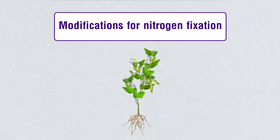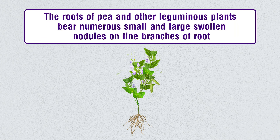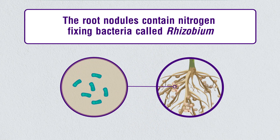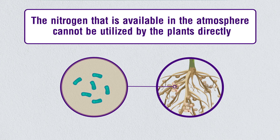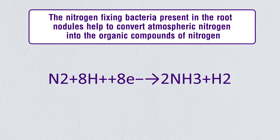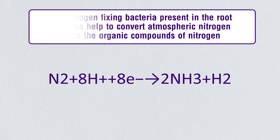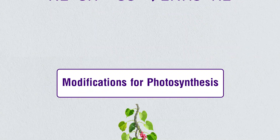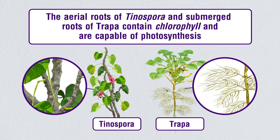The roots of pea and other leguminous plants bear numerous small and large swollen nodules on fine branches of the root. These root nodules contain nitrogen-fixing bacteria called Rhizobium. The nitrogen available in the atmosphere cannot be utilized by plants directly — the bacteria in root nodules help convert atmospheric nitrogen into organic compounds of nitrogen which can be easily utilized by plants, improving soil fertility.